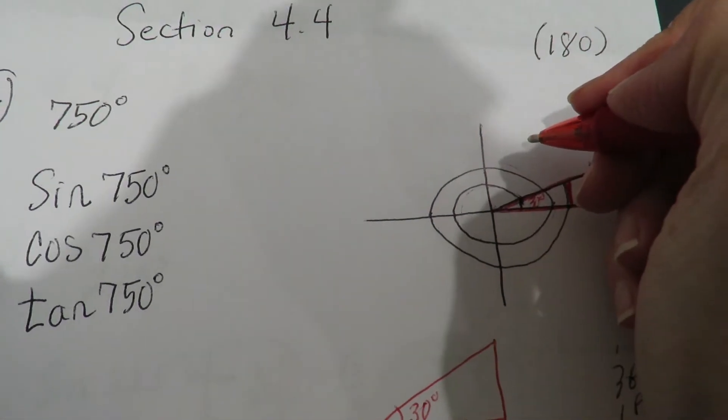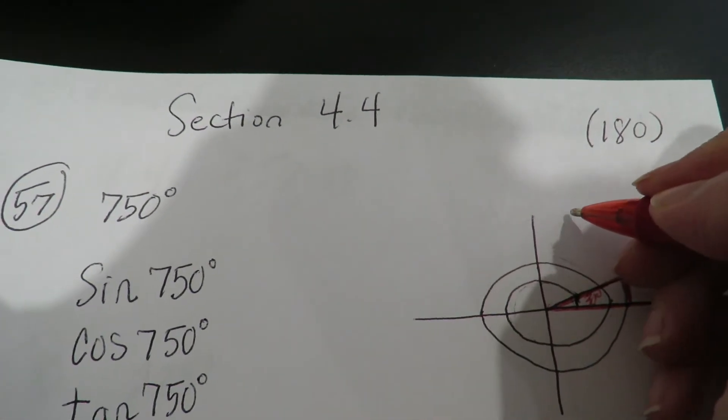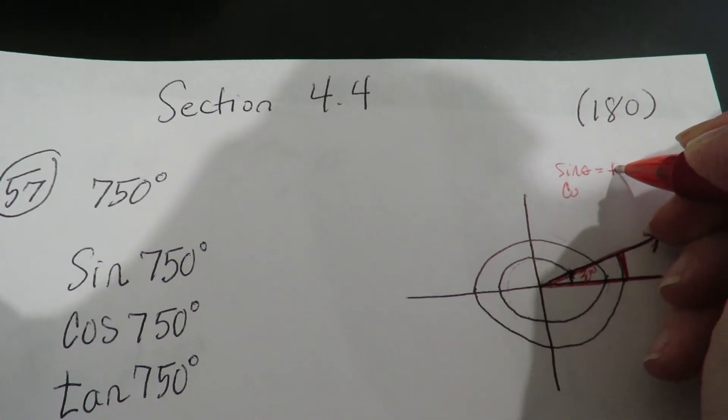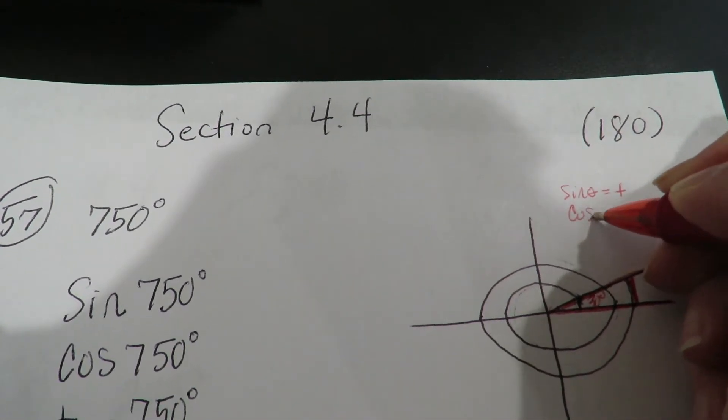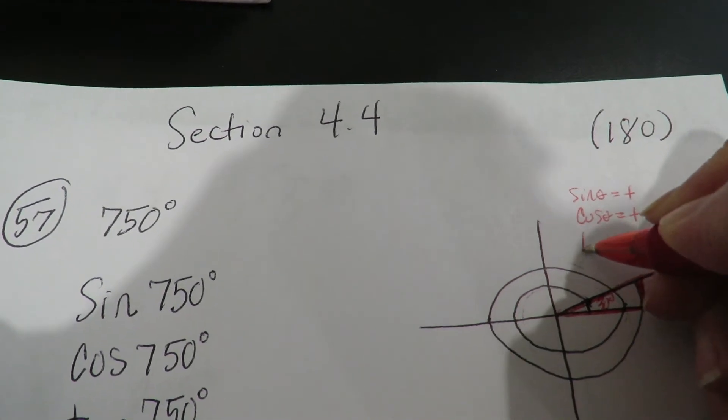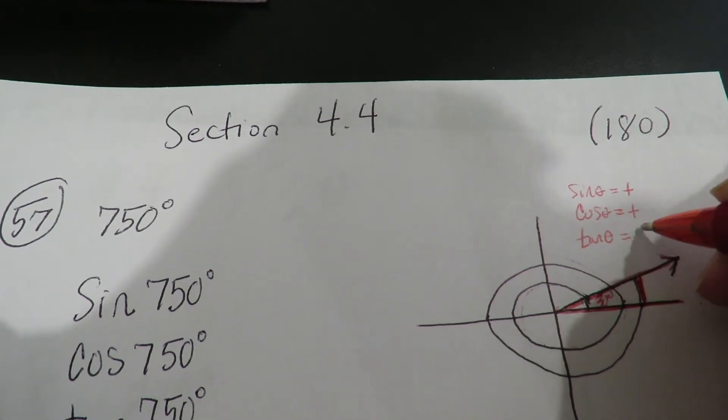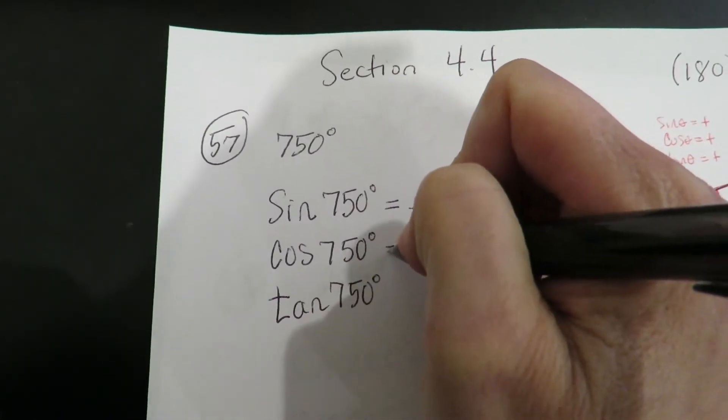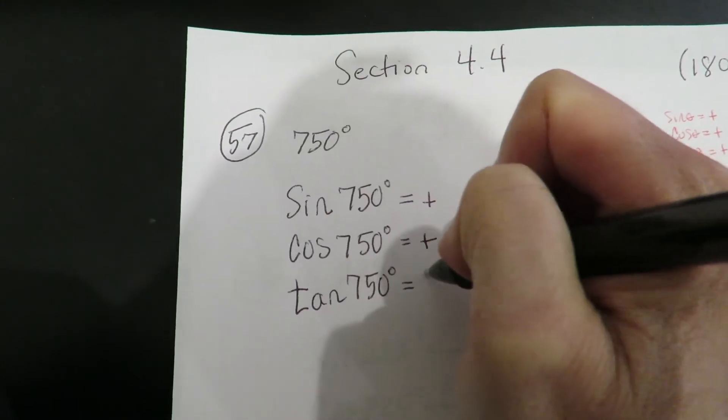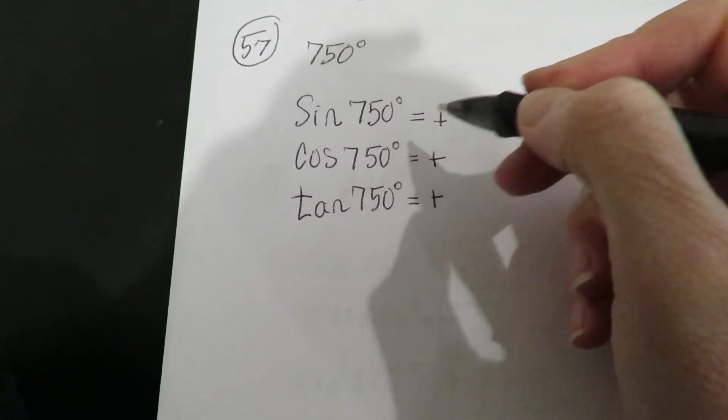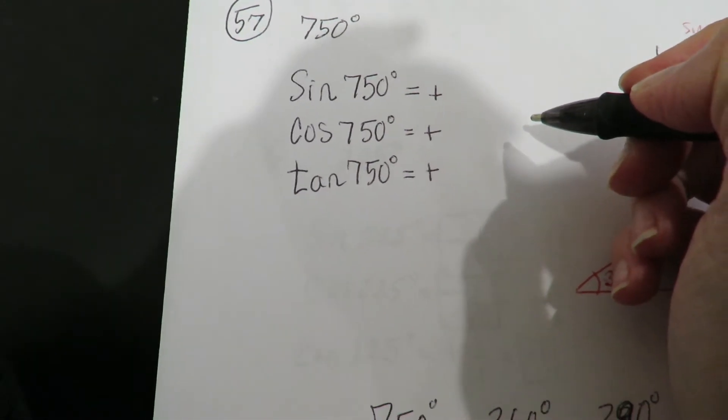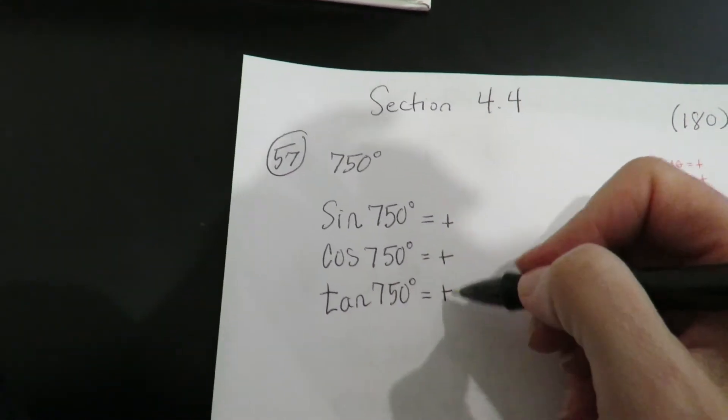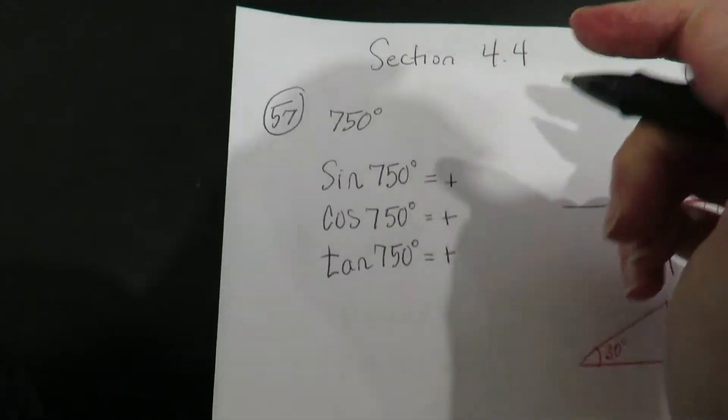We also need to know the plus and minuses for this quadrant. So the cosine of theta in quadrant one is positive. The cosine of theta in quadrant one is positive and the tangent is positive. They're all positive. So the original angle is equivalent to the reference angle as long as you include the correct sign change. And the sign change in this case is since you're in quadrant one, they're all positive.